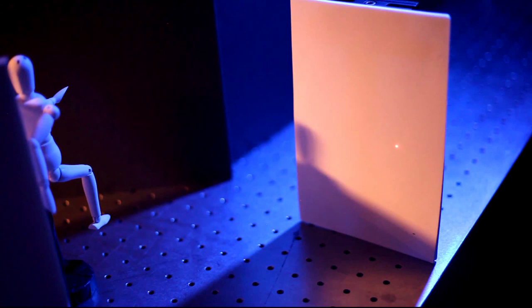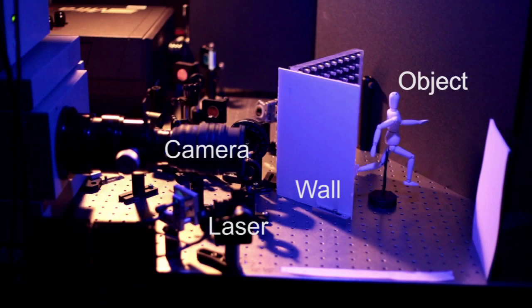Instead, light is scattered from a diffusely reflecting wall. Some of this scattered light then bounces from the object back to the wall and finally to the camera.